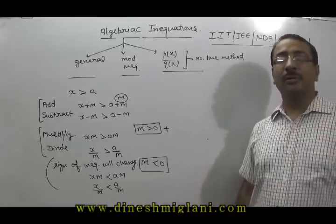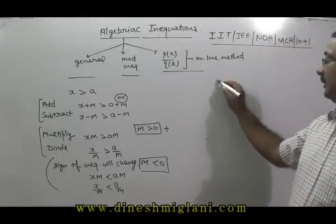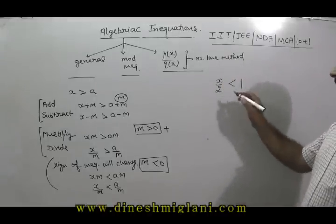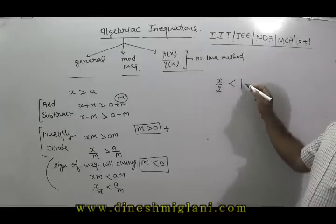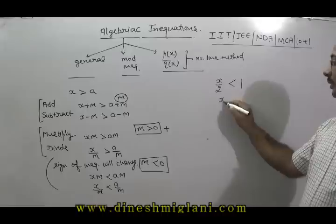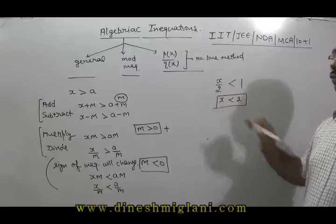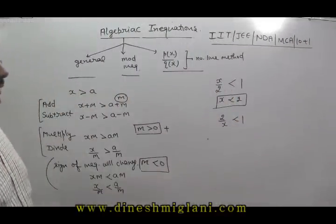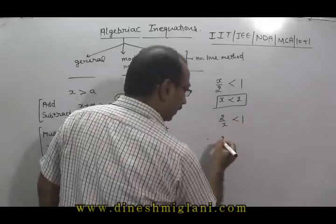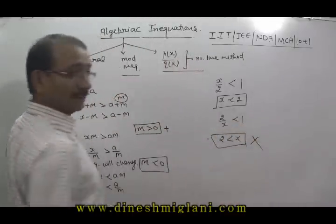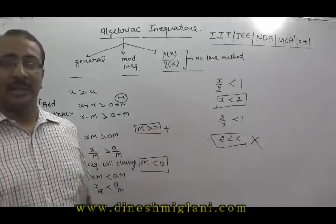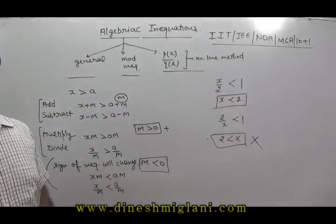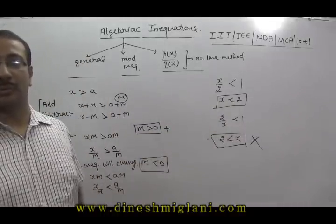If you don't know about the sign, you cannot multiply. For example, if I write X/2 is less than 1, I can multiply both sides by 2 because I know the sign of 2 is positive, giving X is less than 2. On the other hand, if I say 2/X is less than 1, you cannot simply say 2 is less than X — that will be totally wrong. The reason is I don't know the sign of X. X can be positive or X can be negative. If X is positive, I can multiply, but if X is negative, multiplying would give a wrong answer.